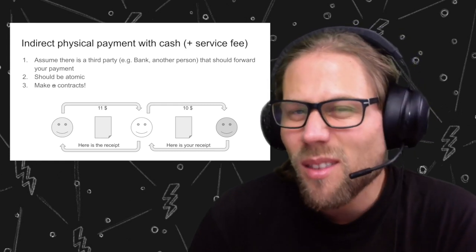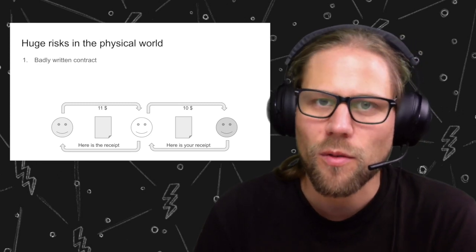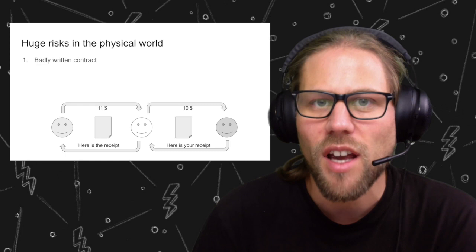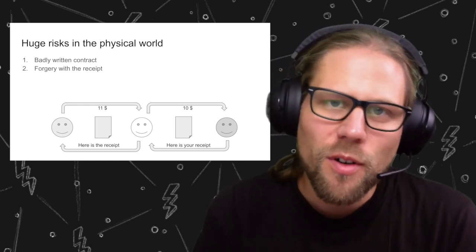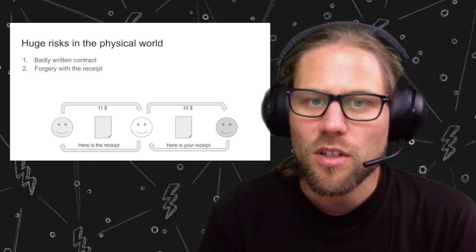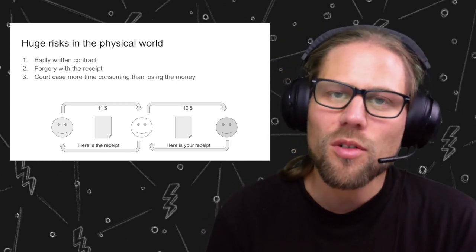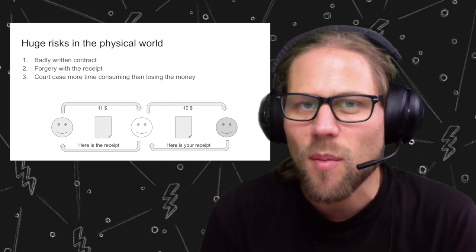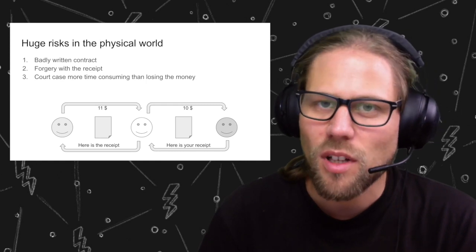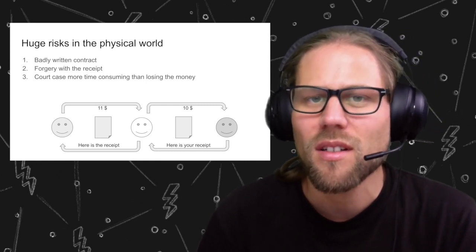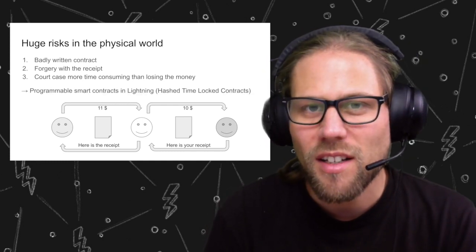That's great — or is it? In the real world there are risks. You could have a badly written contract that is underspecified or not legally binding. There could be forgery with the receipt, where the middle node just creates a receipt for a payment that never happened and still runs with the money. Then you go to a court case, which is time-inefficient and expensive — it might actually be better to just forget the money you lost rather than settle those contracts in court.